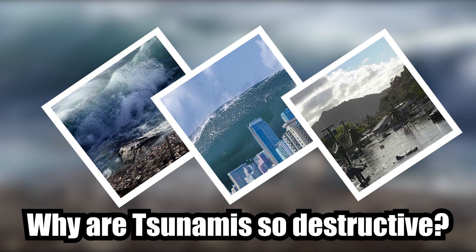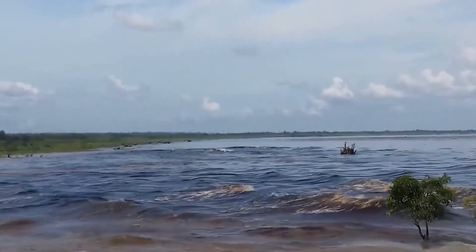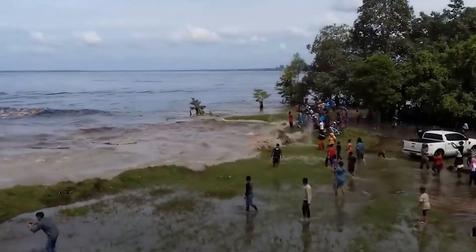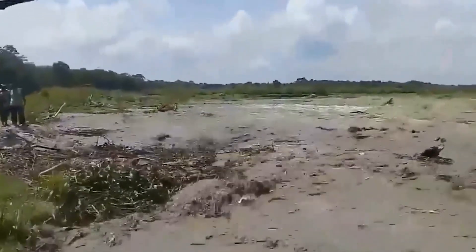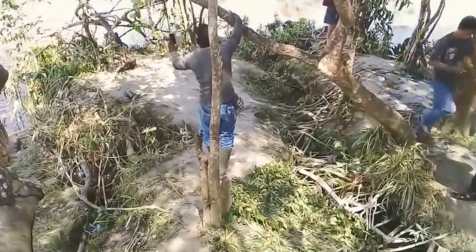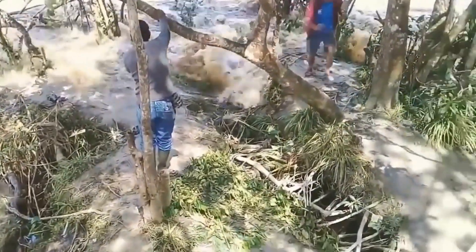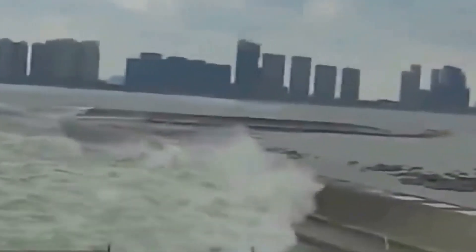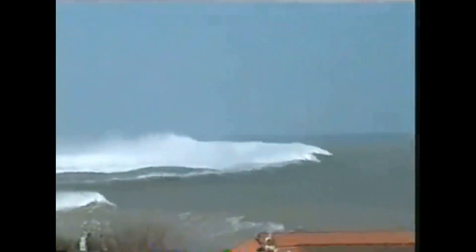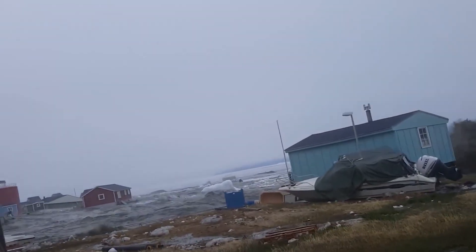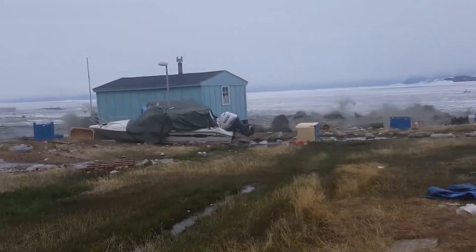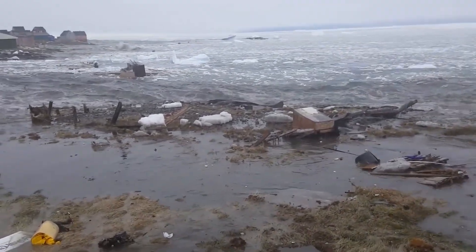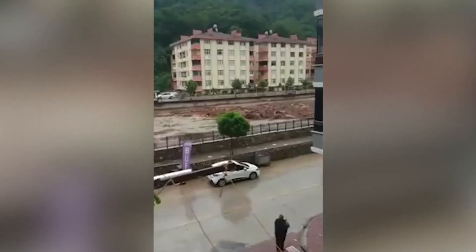Why are tsunamis so destructive? Tsunamis are one of the most destructive natural disasters on earth, and this is largely due to their immense power and size. Because tsunamis are made up of such long wavelengths, they can travel across entire ocean basins with very little loss of energy. This means that by the time a tsunami reaches the shore, it can still be extremely powerful and destructive. Tsunamis can cause massive flooding, damage to infrastructure, and loss of life. They can also trigger landslides, which can exacerbate the destruction caused by the initial wave.